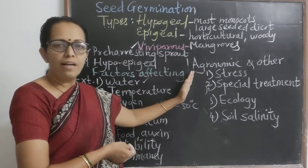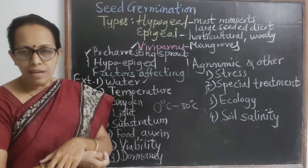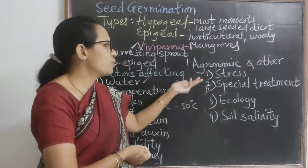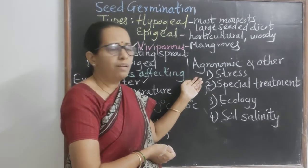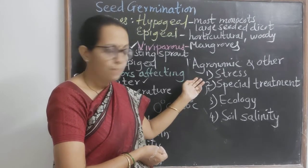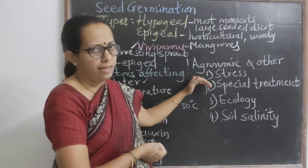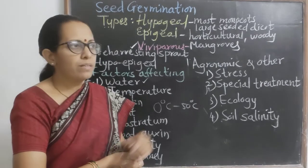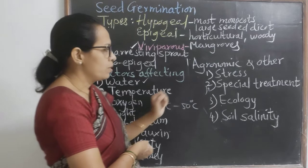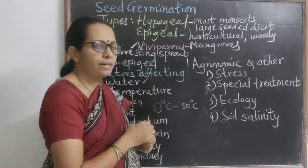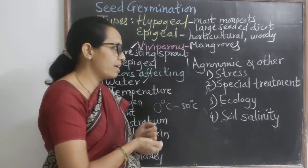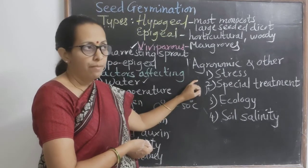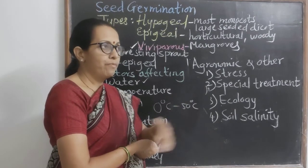Some agronomic factors also affect germination. If a plant has faced stresses like high temperature or extreme climatic conditions, it directly or indirectly affects seed germination. Some seeds require special treatments for germination — mechanical treatments, physical treatments, or chemical treatments. These factors are also important, and we come across them in more detail when discussing dormancy.